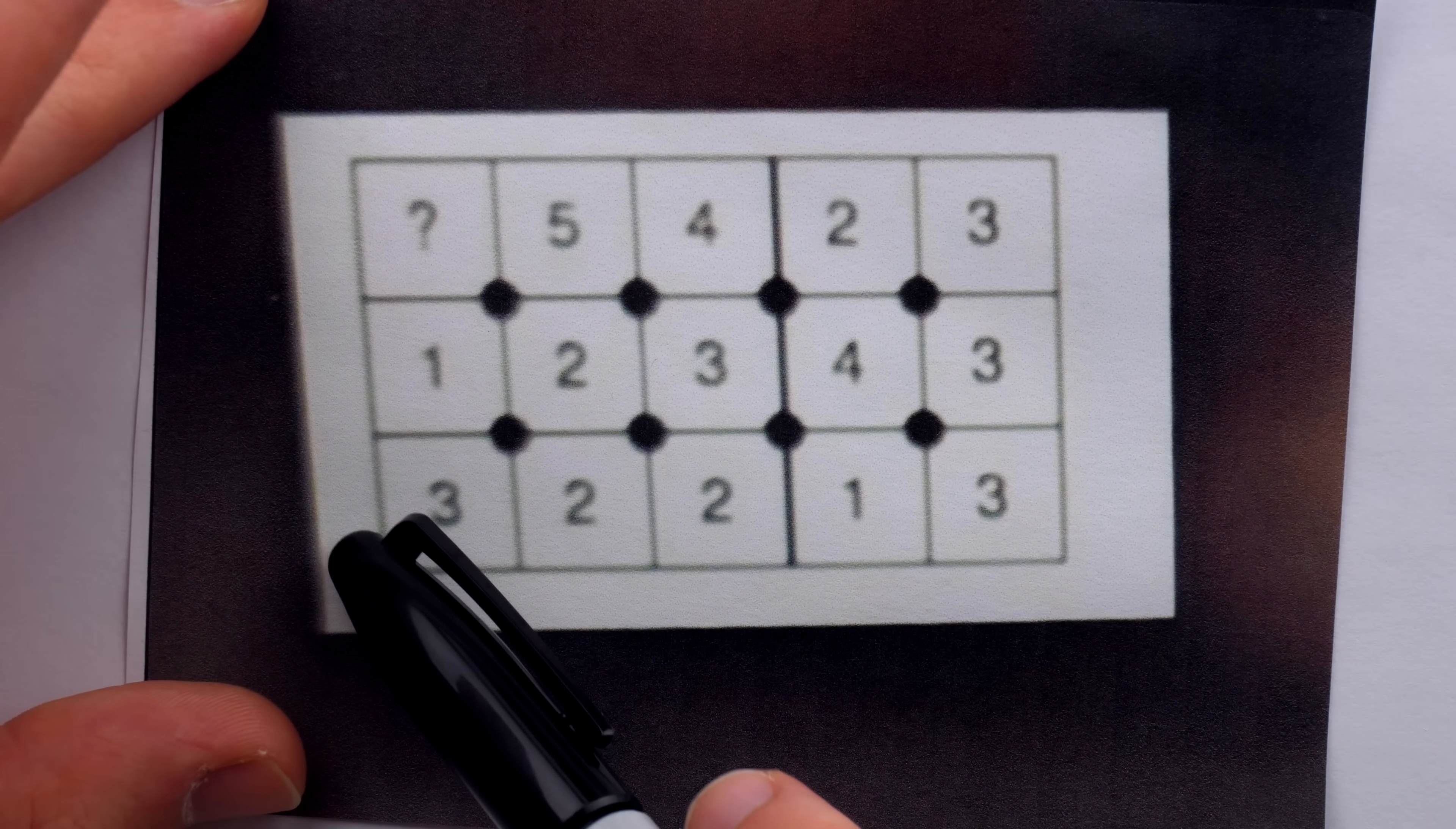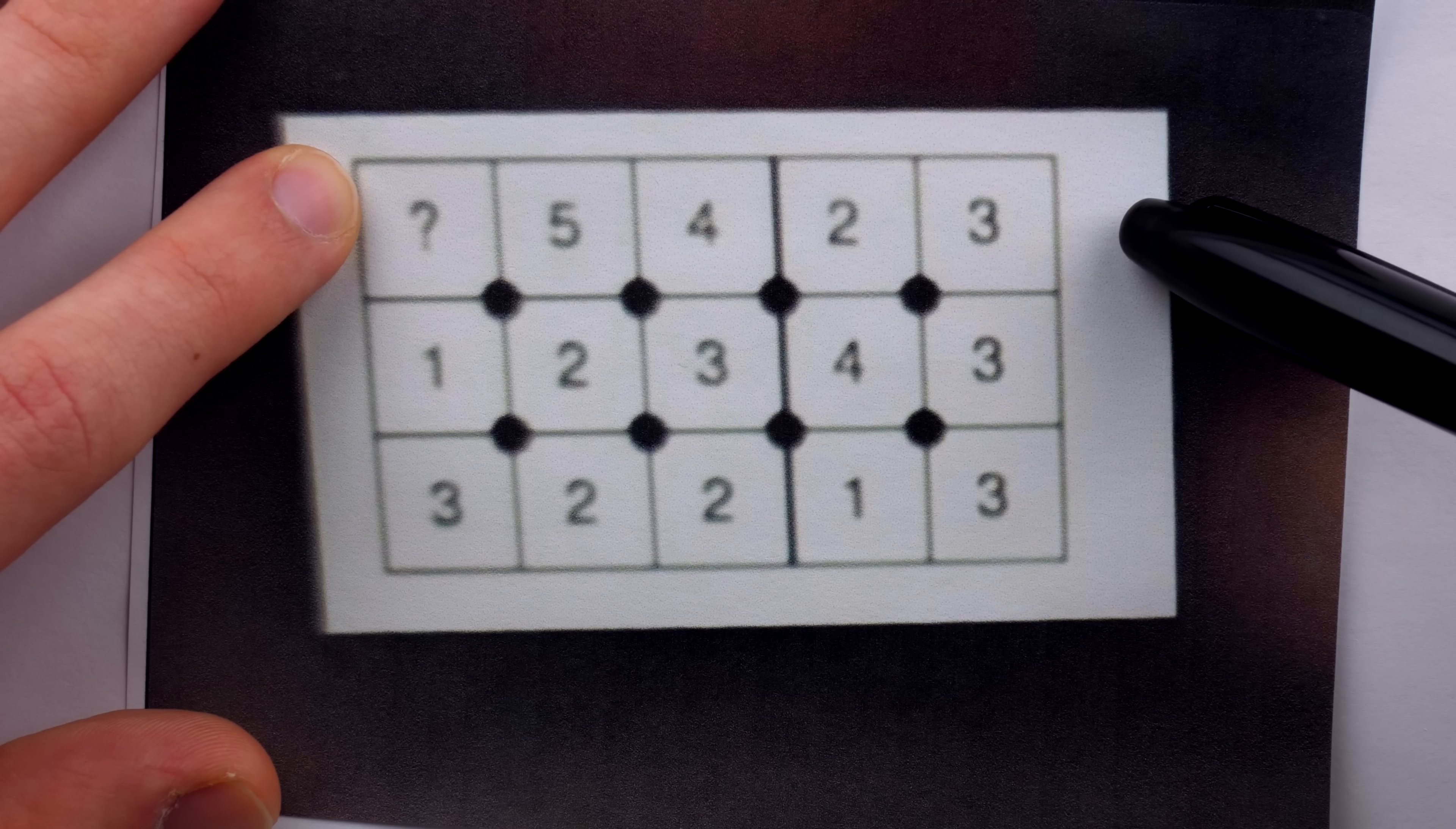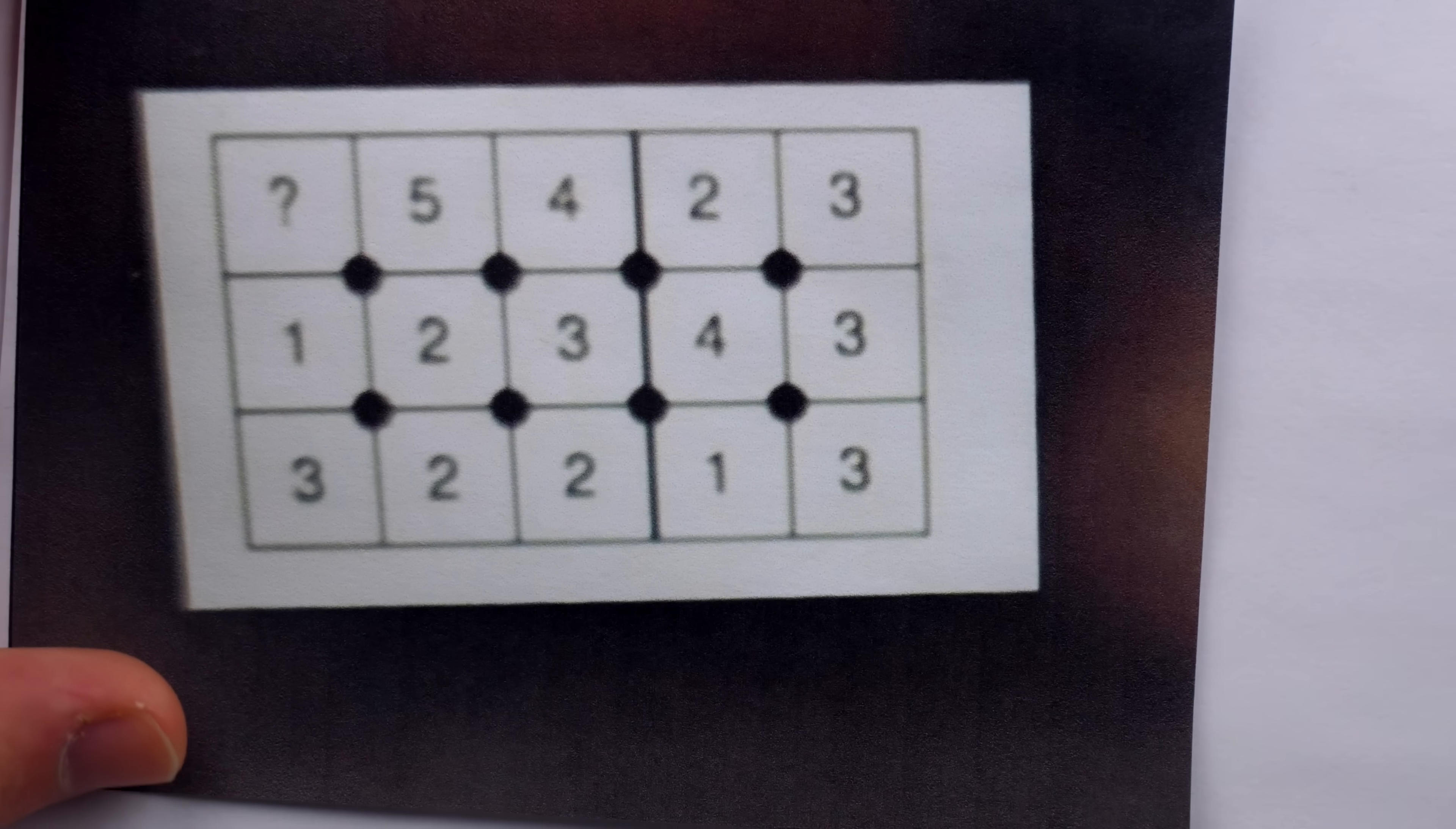One obvious possibility is that row 3 contains a 1, row 2 contains a 1, and so it seems natural that the first row should also contain a 1. Right now it doesn't, so the question mark must be 1. But of course, 1 is not the only possibility.